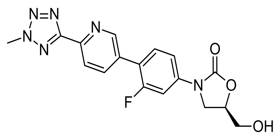Tedizolid phosphate, TR-701, is a prodrug activated by plasma or intestinal phosphatases to Tedizolid following administration of the drug either orally or intravenously. Once activated, Tedizolid exerts its bacteriostatic microbial activity through inhibition of protein synthesis by binding to the 50S ribosomal subunit of the bacteria.